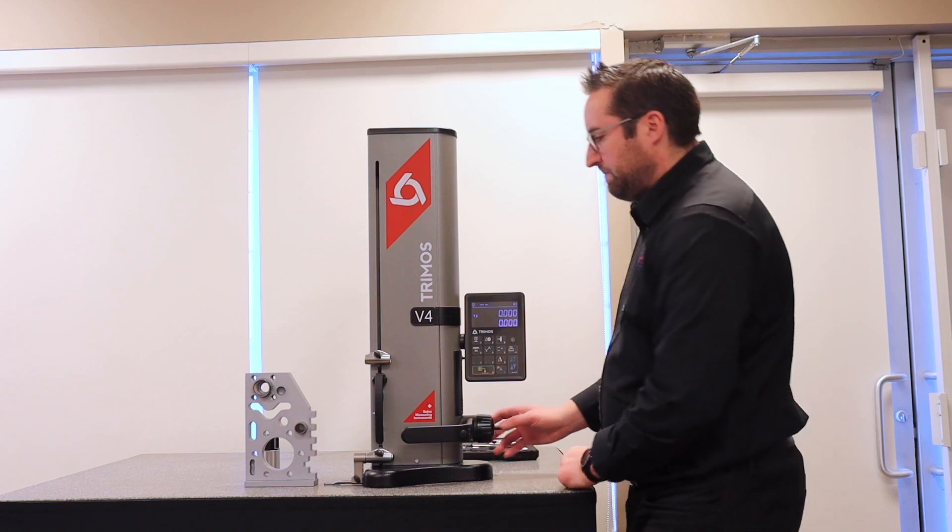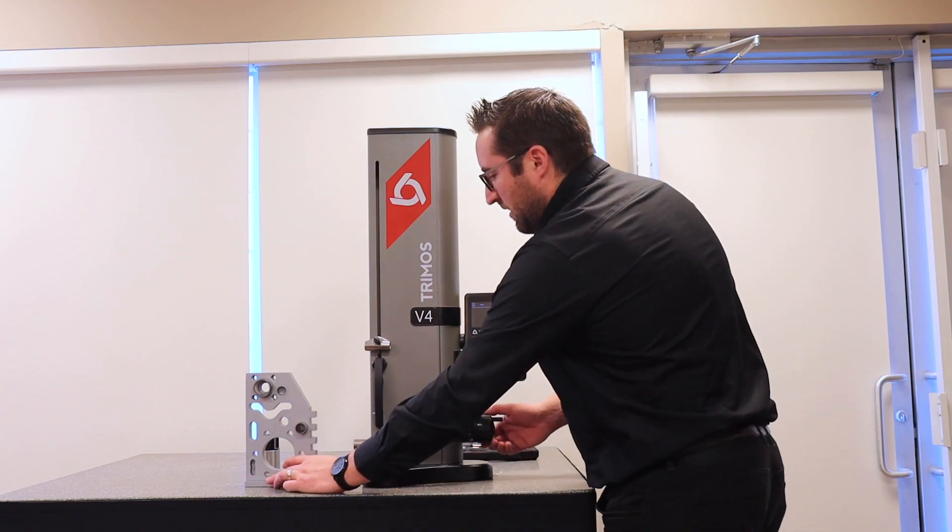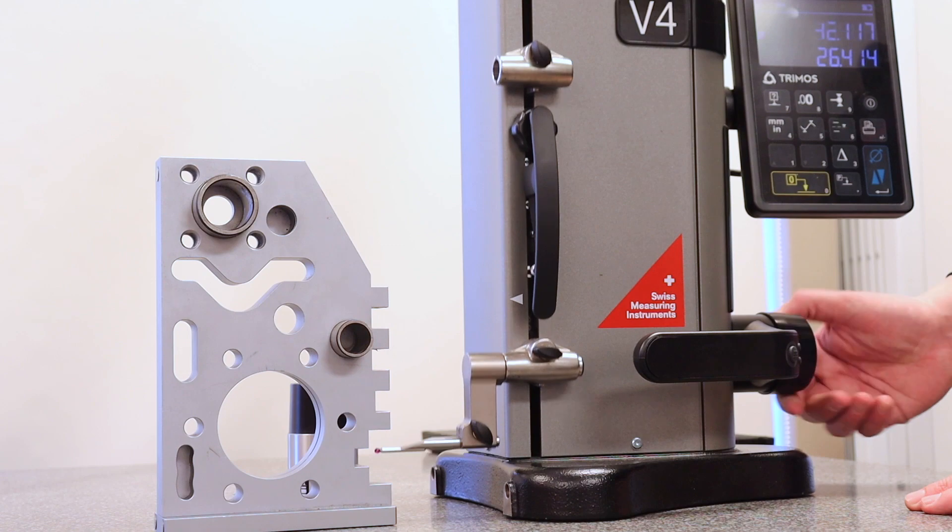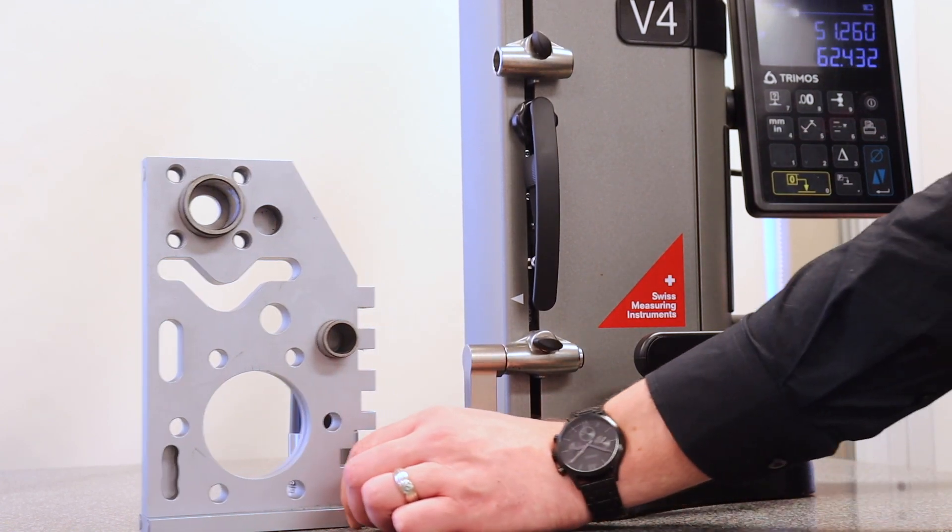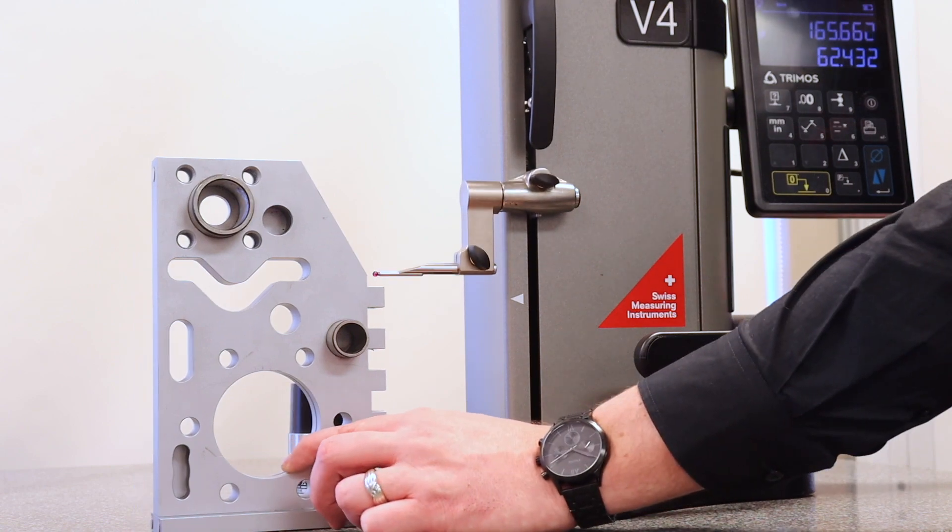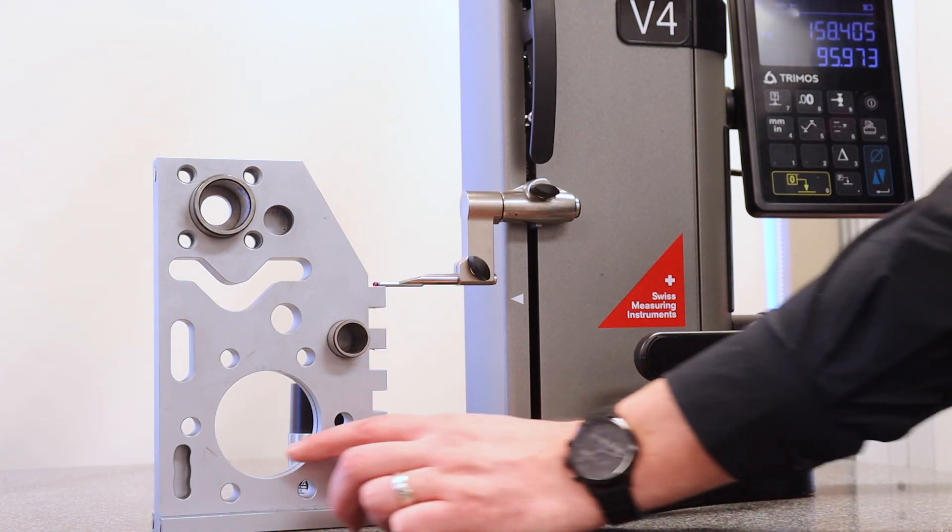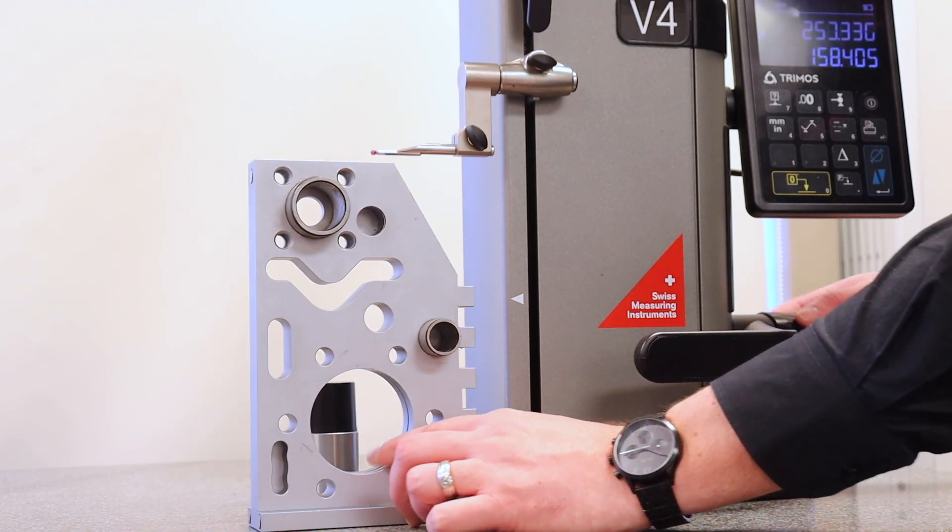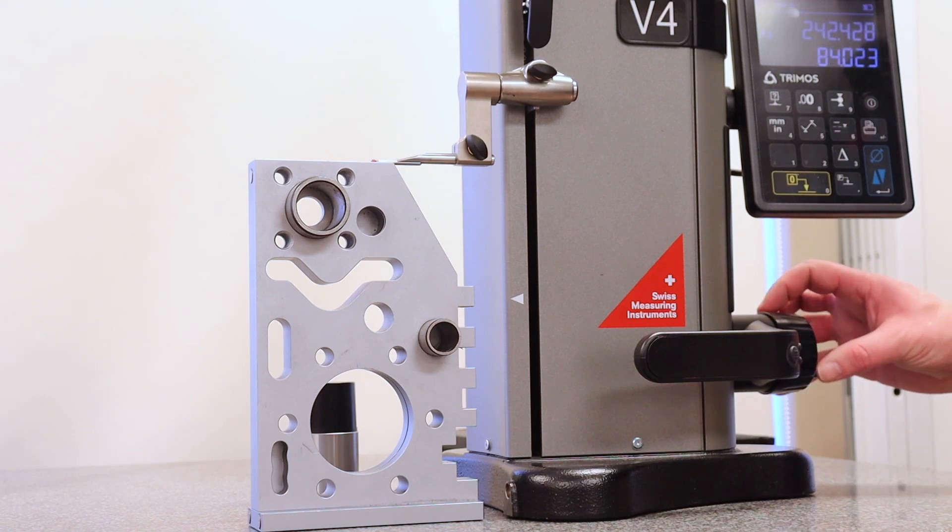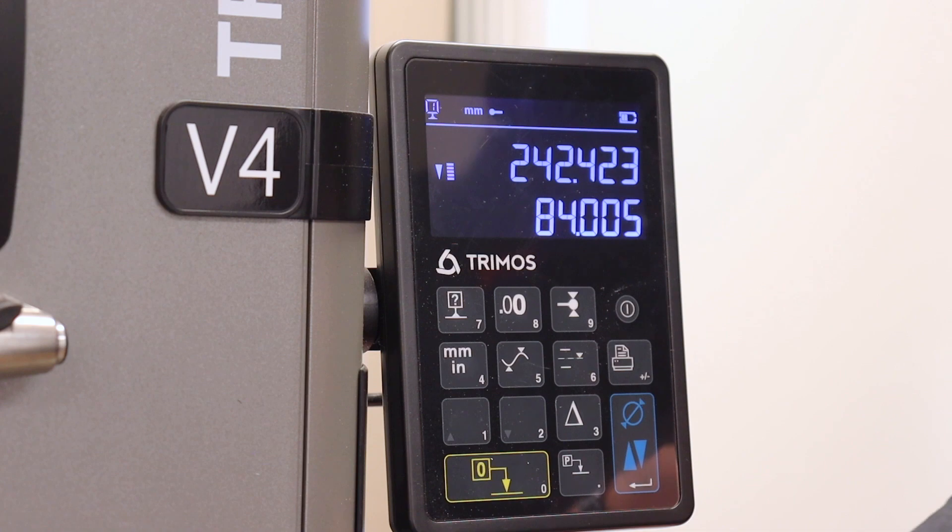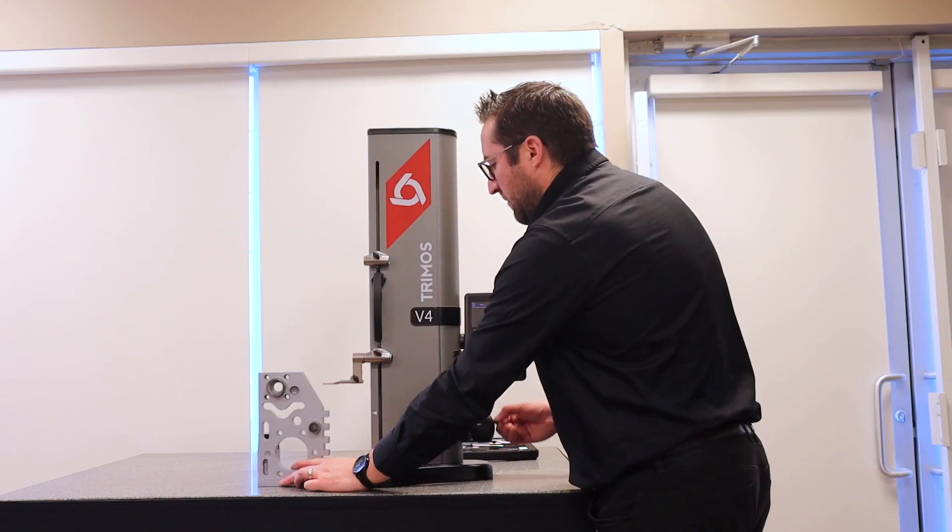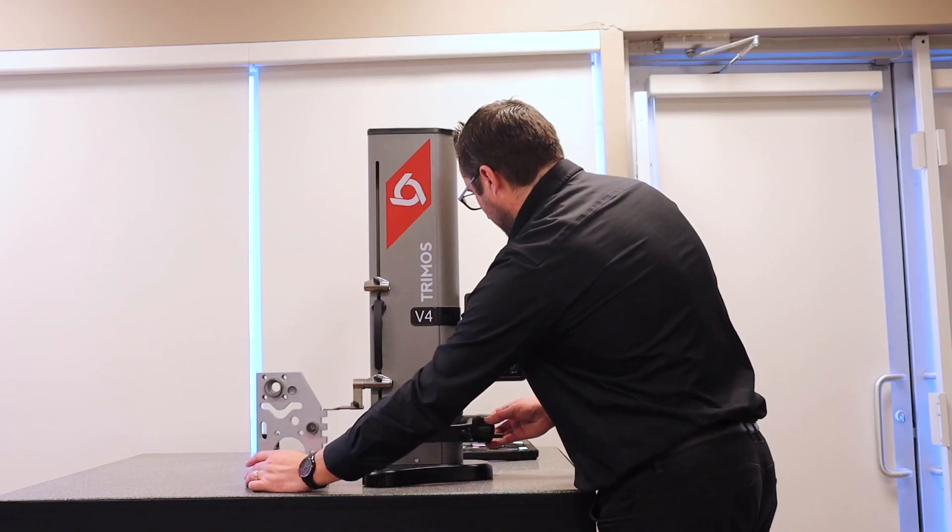So to measure a height, we simply probe down from our reference point, which is a surface plate, and we're going to take some measurements by using the hand wheel here and probing each surface we're interested in. As I'm moving the probe up and down, you'll see here we have two lines of code. We've got the live probe to our reference, which is a surface plate, and the second line, which is the distance between the last two points.